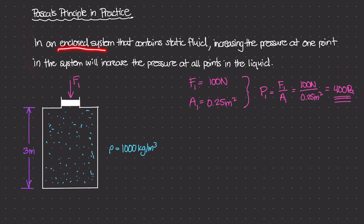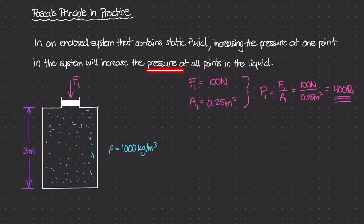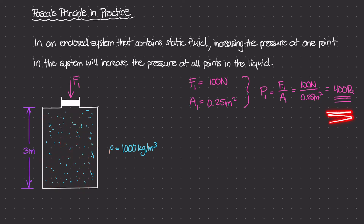Going back to Pascal's principle: in an enclosed system that contains static fluid, increasing the pressure at one point will increase the pressure at all points in the liquid. We applied Force F1 to the piston, causing a pressure increase of 400 pascals. Because this principle says that increasing the pressure at one point increases pressure at all points, this 400 pascals is now applied throughout the entire container — at every location inside, including the bottom.